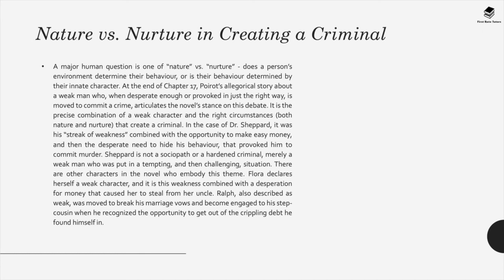Nature versus nurture in creating a criminal. A major human question is one of nature versus nurture: does a person's environment determine their behavior or is their behavior determined by their innate character? At the end of chapter 17, Poirot's allegorical story about a weak man who, when desperate enough or provoked in just the right way, is moved to commit a crime, articulates the novel's stance on this debate. It is the precise combination of a weak character and the right circumstances that creates a criminal. In the case of Dr. Shepard, it was his streak of weakness combined with the opportunity to make easy money and then the desperate need to hide his behavior that provoked him to commit murder. Shepard is not a sociopath or a hardened criminal, merely a weak man who was put in a tempting and then challenging situation.